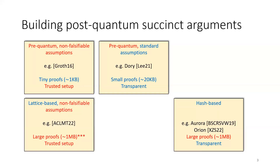That approach has been done with arguments like GROTH16. As an example, there are lattice-based proof systems based on strong non-falsifiable assumptions with a trusted setup — one example being paper ACLMT22. These still have quite large proof sizes in practice, but I'm hopeful this will improve since this is a very new line of work.